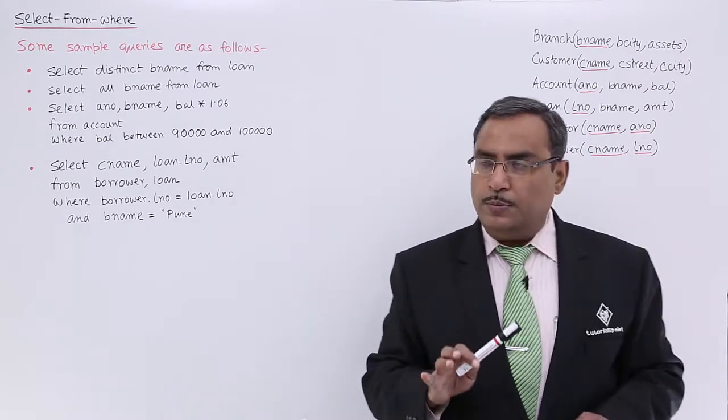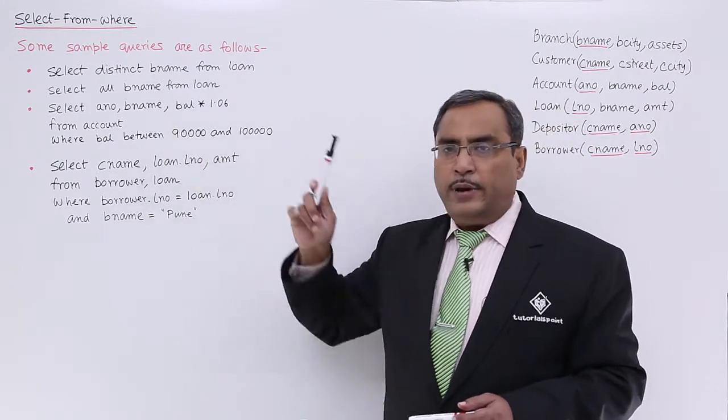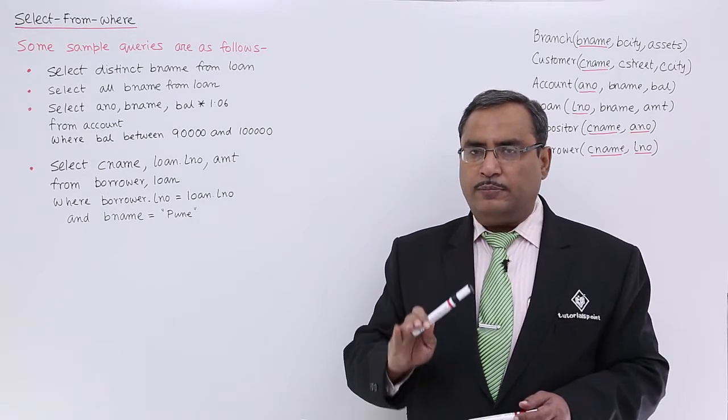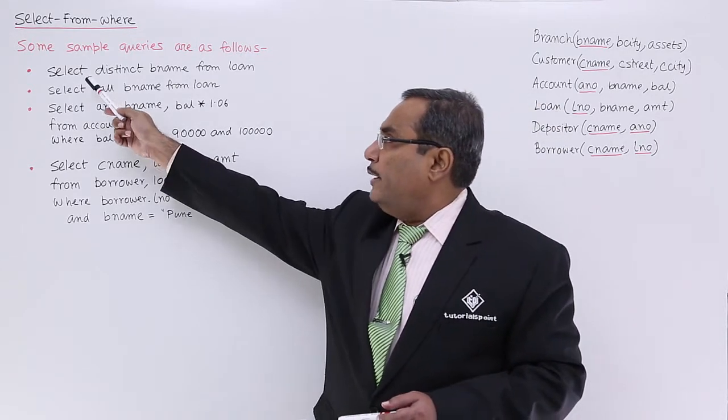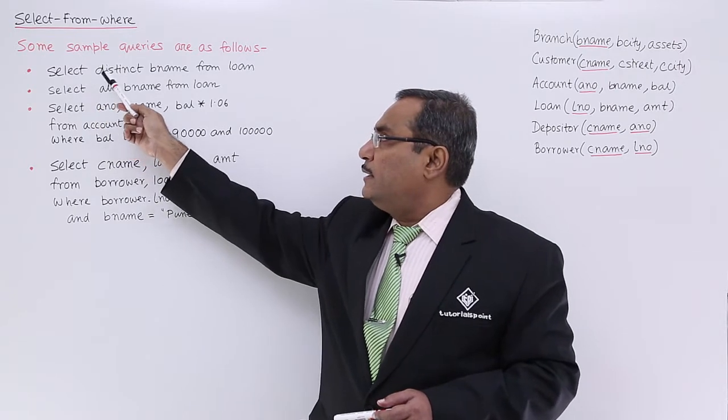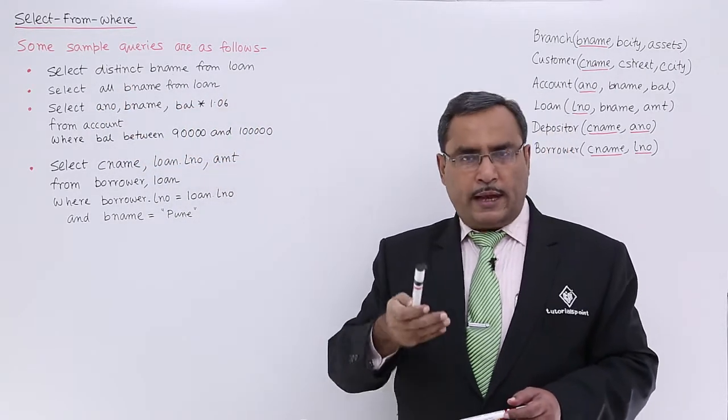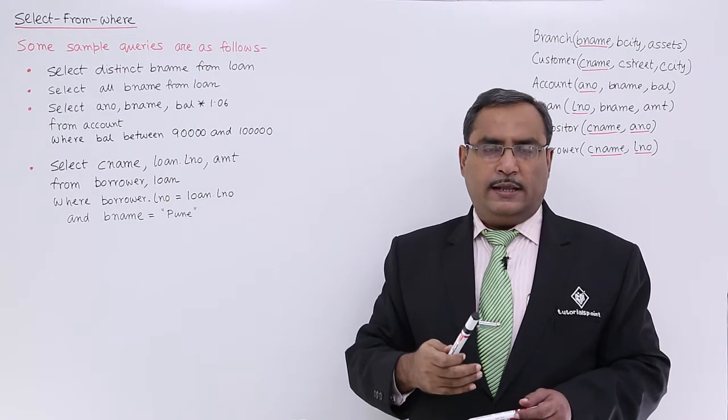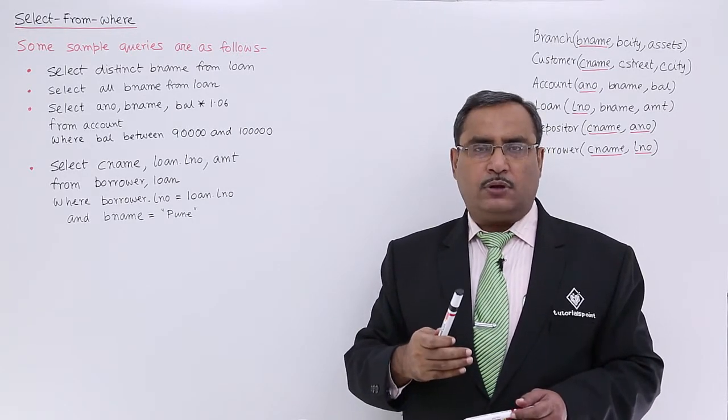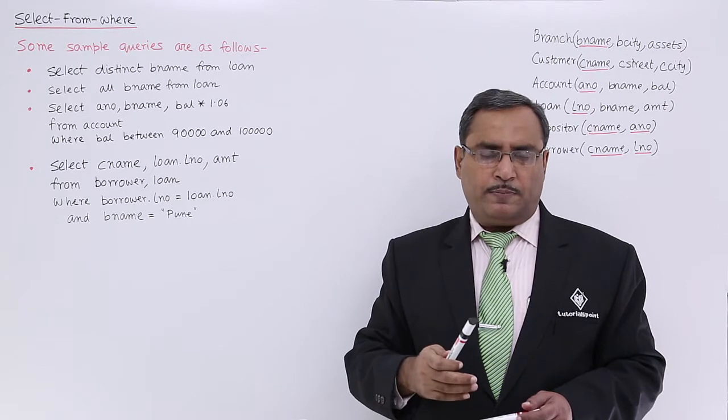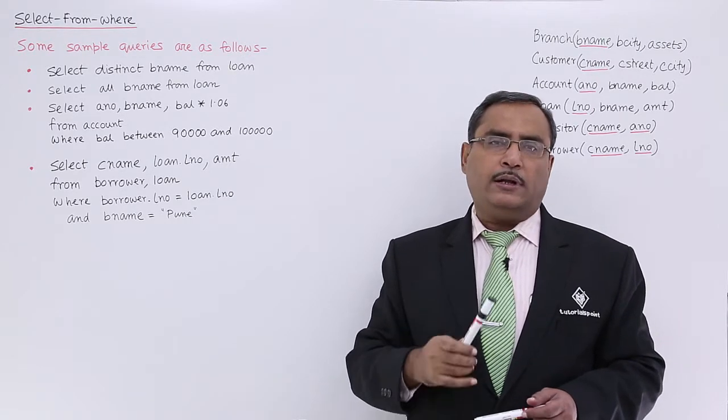Three attributes are there. I need to display distinct branch names from the loan relation. The query will be: Select distinct bname from loan. In this way, I can get the distinct list. That means if a branch name has repeated multiple times, in the output it will come once.